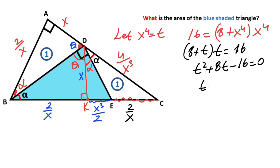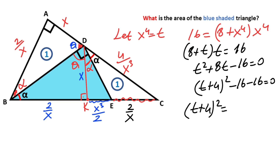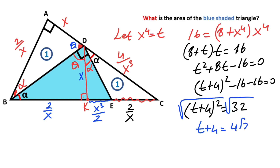Converting to a perfect square: (t + 4)² minus 16 minus 16 equals 0, so (t + 4)² equals 32. Taking the square root of both sides, t + 4 equals 4√2, so t equals 4√2 minus 4. We know that t equals x to the power of 4.